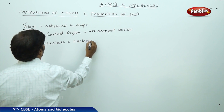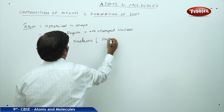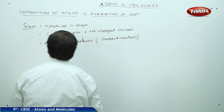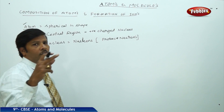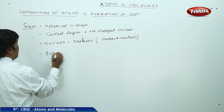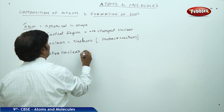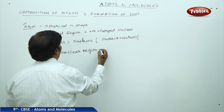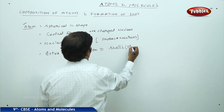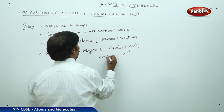The nucleons are actually equal to the sum of protons plus neutrons. Outside the nucleus, the extra-nuclear region is made up of shells or orbits, and these orbits are filled with electrons.